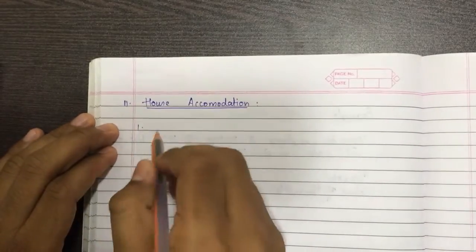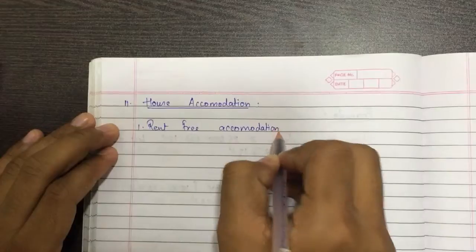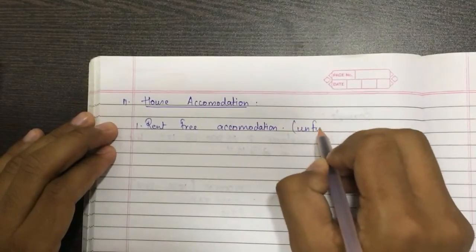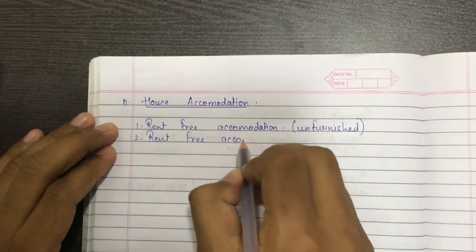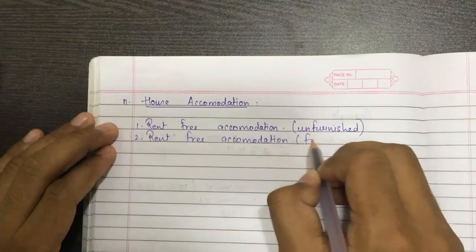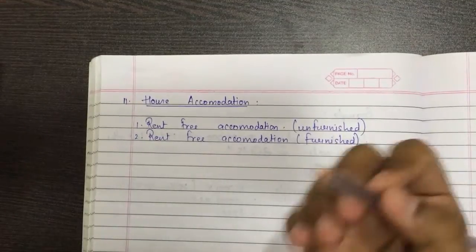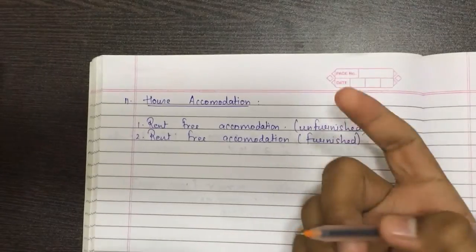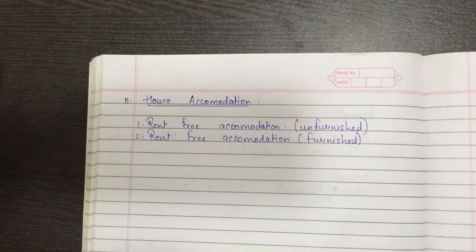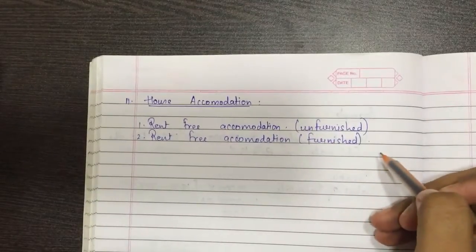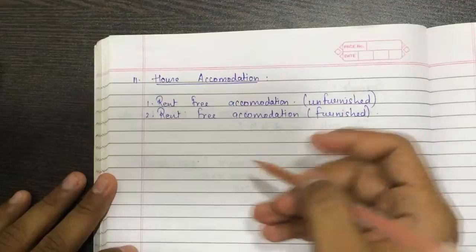Under this head, house accommodation is first divided into: rent-free accommodation unfurnished, and rent-free accommodation furnished. The employer may have an unfurnished apartment as an extra and give it to the employee for accommodation so he can stay and work for the company. Similarly, the employer may have a furnished accommodation. So how each will be taxable — these are the two cases. We'll first see rent-free accommodation unfurnished.